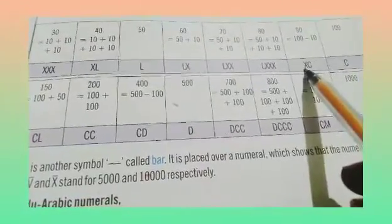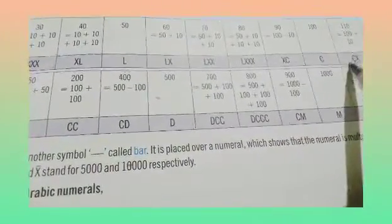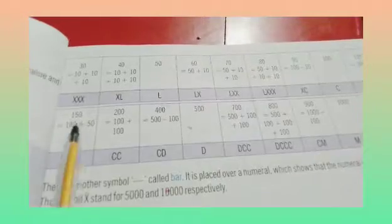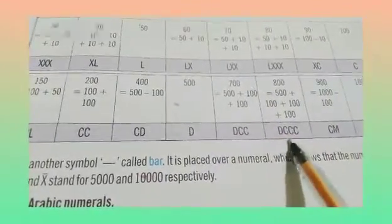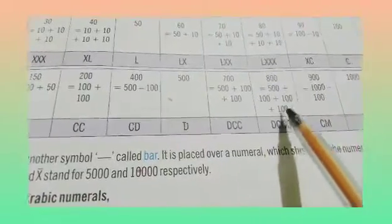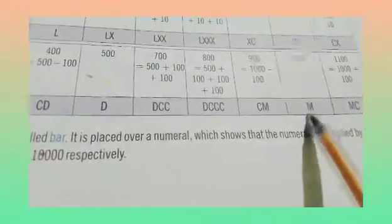XC means C is 100 and X is 10, so 100 minus 10 is 90. CX means 100 plus 10 is 110. CL means C is 100 and L is 50, so 150. CC means 200. CD means D is 500 minus C is 100, so 400.